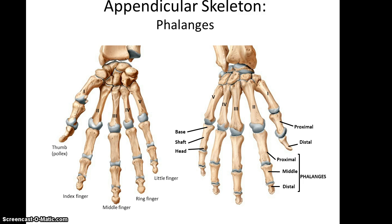After the metacarpals are the phalanges — each one is called a phalange or phalanx. On four of the five fingers you have a proximal, middle, and distal phalange. However, with the thumb, you have only a proximal and a distal phalange; there is no middle phalange. They are also numbered one through five starting with the thumb as number one. Being long bones, they also have a base that articulates with the metacarpals, a shaft, and a head. And that is this lecture on the upper appendicular skeleton.